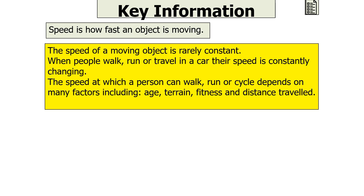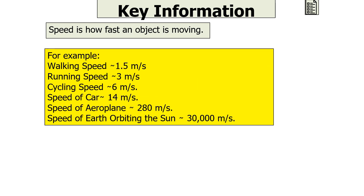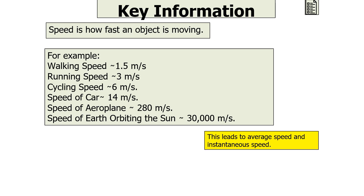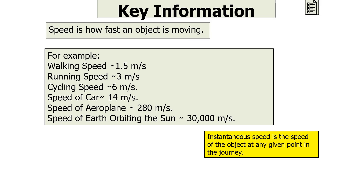There are many different examples of speeds in the real world, such as walking speed, running speed, cycling speed, the speed of a car, the speed of an aeroplane, and the speed of the Earth orbiting the sun. The speed of all objects rarely stays constant throughout a journey. This leads to two different concepts: average speed, which is the total distance covered per the total time elapsed, and instantaneous speed, which is the speed of the object at any given point in the journey.